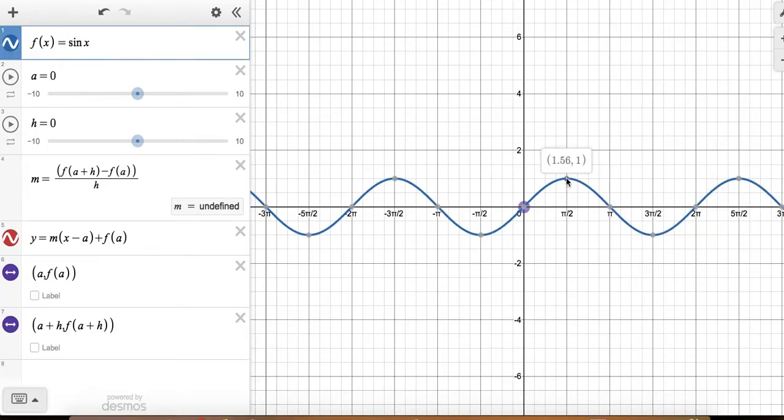So at pi over 2 we can see again the slope looks like it's gonna be 0, so I'm gonna let my a value be pi over 2.